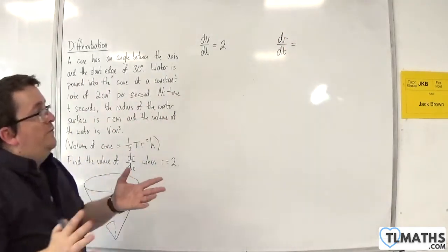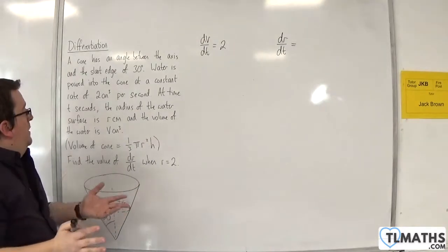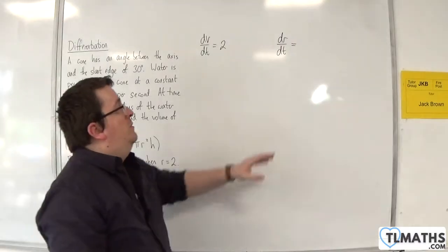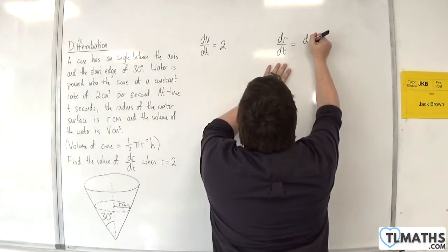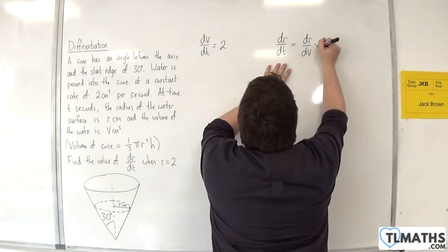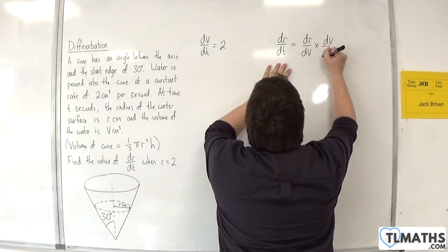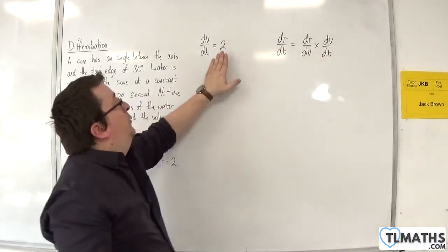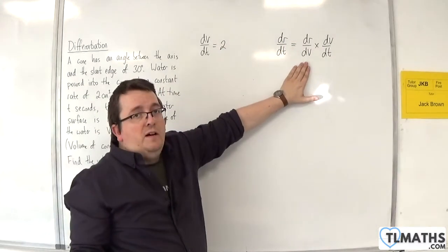Now the only other variable that we've got is the volume v. So we set up a chain rule for dr by dt, which is going to be dr by dv times dv by dt. We've got the dv by dt sorted, but we don't have the dr by dv.